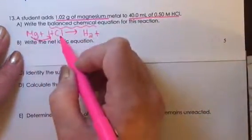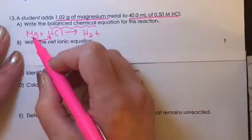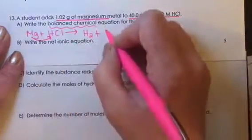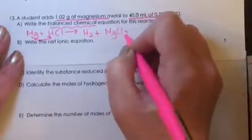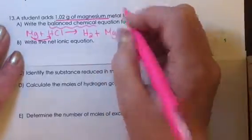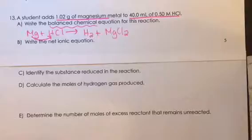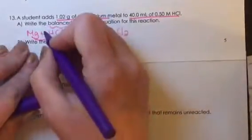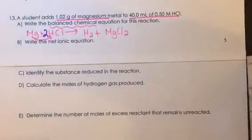And then the magnesium combines with the chlorine. Magnesium has a plus 2 charge, chlorine has a minus 1, and so the product will be MgCl2. And then to balance this equation, we need a 2 in front of the hydrochloric acid.